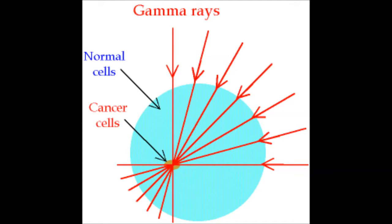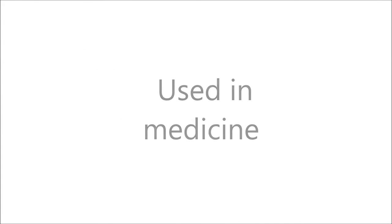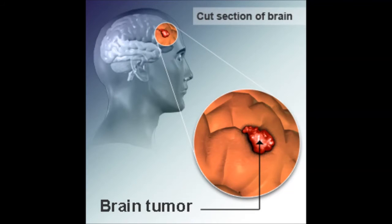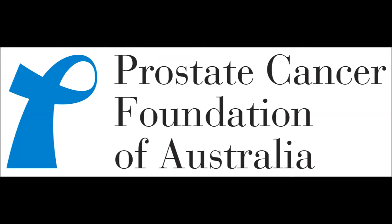Here in this diagram you can see gamma rays which are produced from the iodine treating a cancer cell, and that is exactly what the radioisotope does. It is used in medicine to treat patients with brain, lung, and prostate cancer.